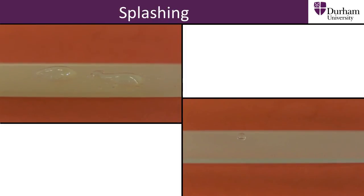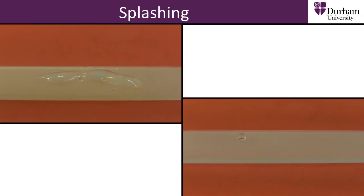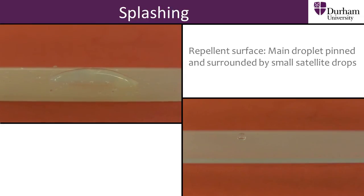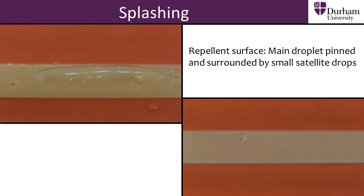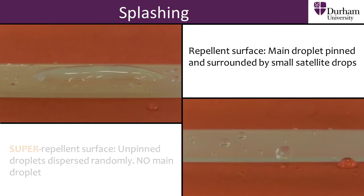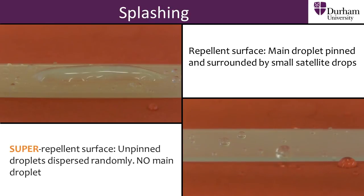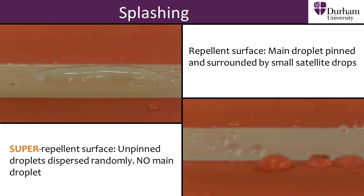Splashing can occur when a water droplet is released from a large height, meaning the water droplet is travelling faster when it hits the surface. Droplets that splash are normally travelling faster than droplets that bounce without splashing. Depending on the surface, the droplets look different after the splash. In general, we don't want liquids to splash because the droplets spread out randomly and are hard to control.